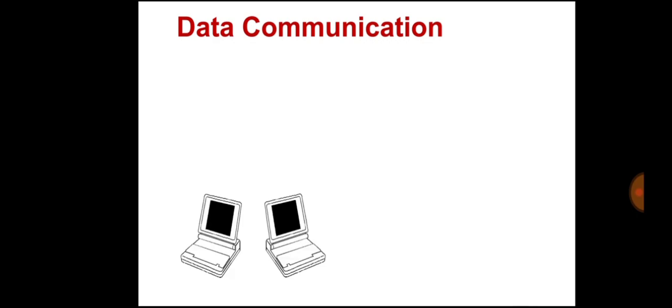Data communication aims at the transfer of data and maintenance of the data during the process, but not the actual generation of the information at the source and receiver. A data communication system may collect data from remote locations through data transmission circuits and then output processed results to remote locations.